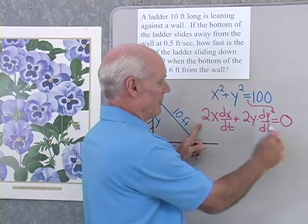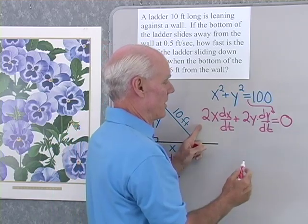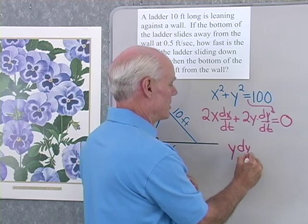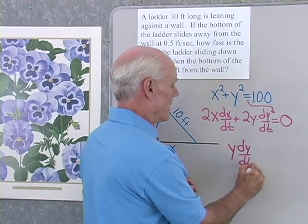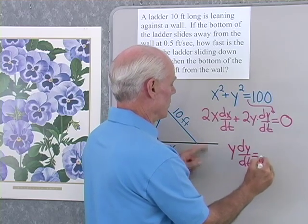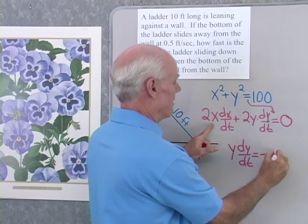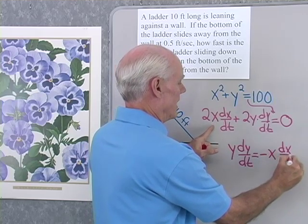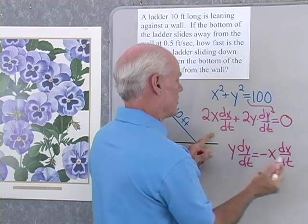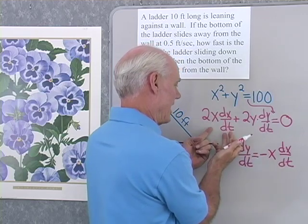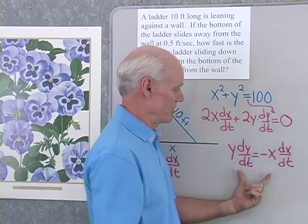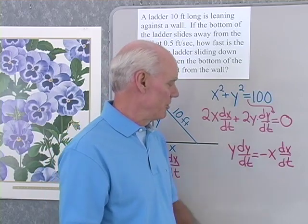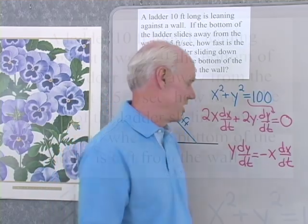I can simplify a little bit by dividing both sides by 2. Written this way: y times dy/dt is equal to negative x times dx/dt. I've divided out the 2's and moved the x dx/dt term to the other side. I could go a little farther and divide by y, but let's not do that just yet.